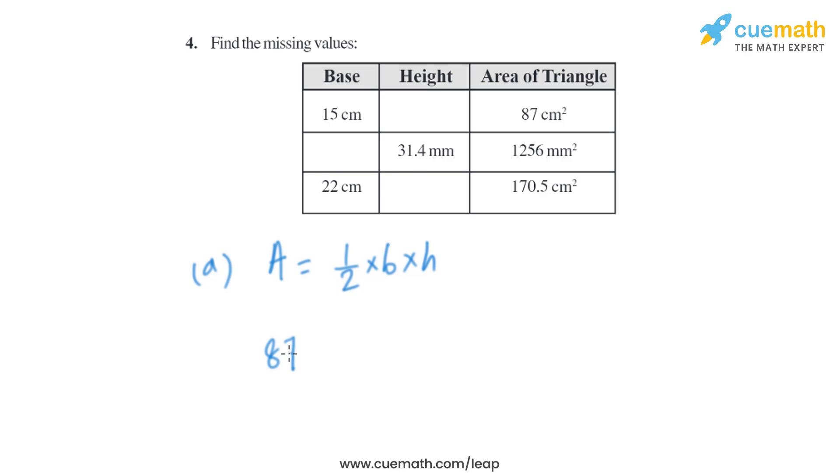We know that the area of triangle is given, that is 87 square centimeter, and base of the triangle is given, that is 15 centimeter. We have to find the height from there. So when we simplify it we will get 15H.